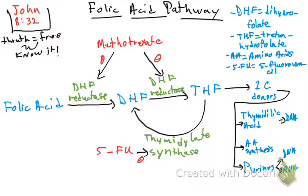So that means if we give methotrexate and 5-FU, you cannot proceed to the one-carbon donors. You cannot go to thymidylate, so you cannot make DNA. You cannot do amino acid synthesis, and you cannot make purines — which means you also cannot make DNA and RNA through the purine pathway. All of those downstream processes are affected.